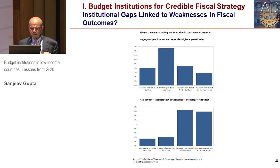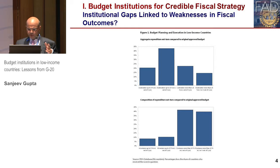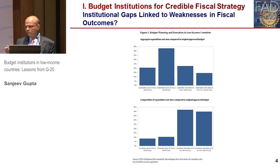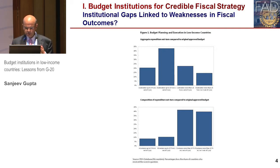Let me first establish the link between institutions and fiscal outcomes. What this slide presents is the results from PFAS scores of 50 countries. PFAS is a tool used to diagnose weaknesses in public financial management systems. What it's showing is that if one looks at these scores, the aggregate out-turn in the budget compared to the approved budget shows a huge deviation — in some countries almost up to 40 percent — for both aggregate and composition of expenditure. This is suggestive of weakness in budget institutions in low-income countries.